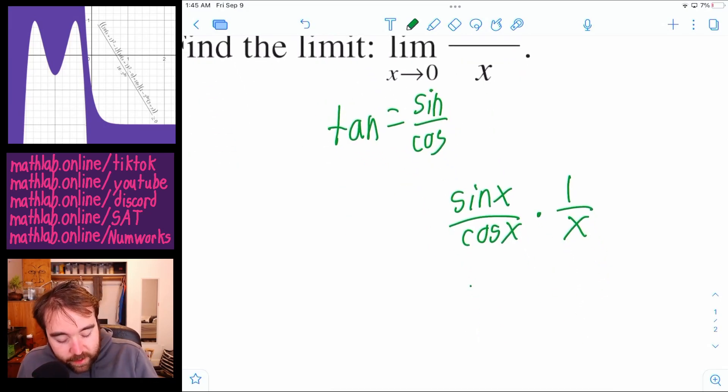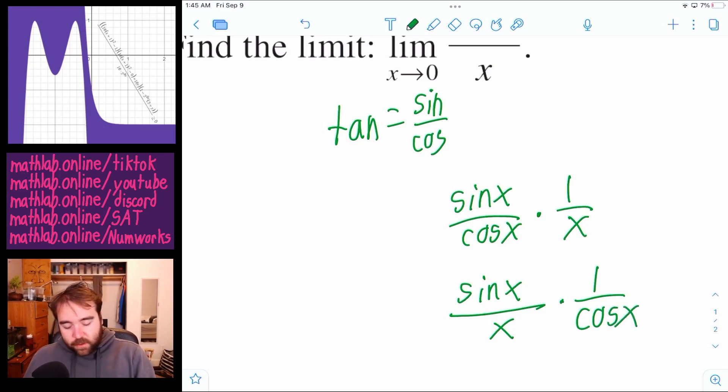But now if you rearrange things, look what we have. We make the sine of x over x, and then one over cosine of x. So we're just rearranging stuff. And see, this is why you have to be really good with algebra for calculus.